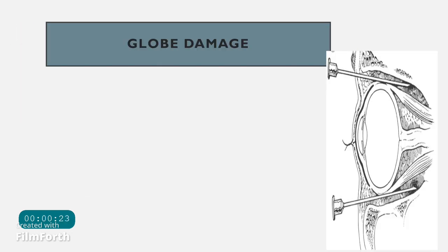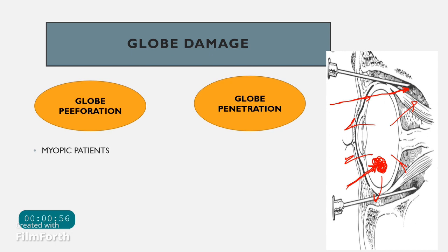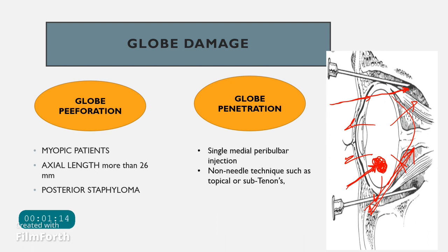Globe damage includes globe perforation — with both an entry and exit wound — and globe penetration, where the needle enters but does not exit, potentially injecting anesthetic agent into the eyeball causing rupture. Globe perforation is more common in myopic patients with axial length more than 26 mm and in posterior staphylomatous eyes. In high-risk myopic patients, a single medial peribulbar injection is safer, or non-needle techniques like topical or subtenons anesthesia are preferred.